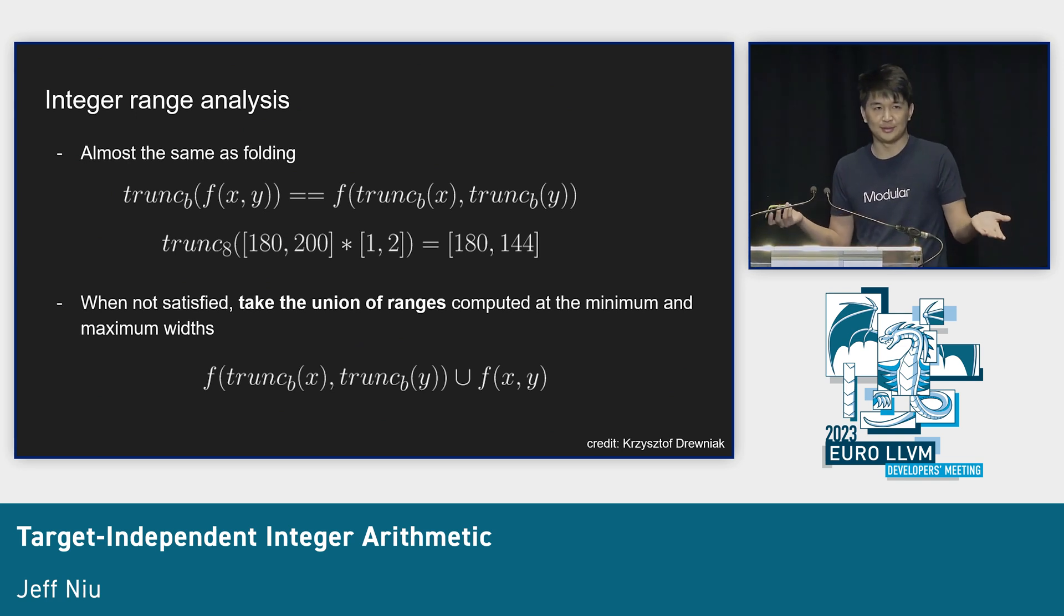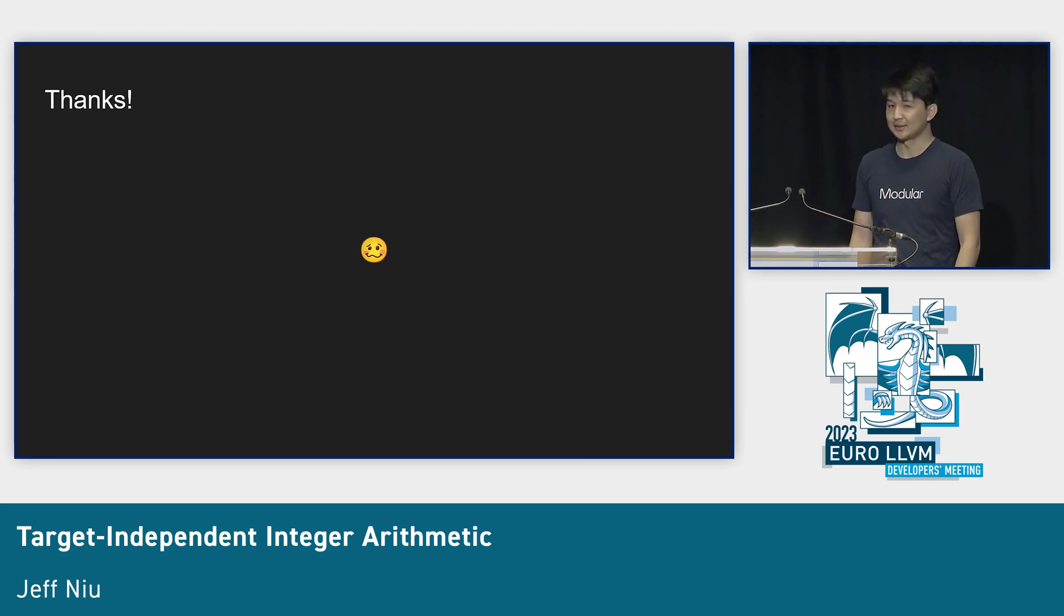If the property isn't satisfied, instead of saying integer range analysis failed, we take the union of ranges computed at maximum width and minimum width. Because you're truncating, you know the result is somewhere between these ranges. This means if you're comparing to the maximum value of this integer type, you can still fold that even though that maximum value has a huge range. That's it, thanks.